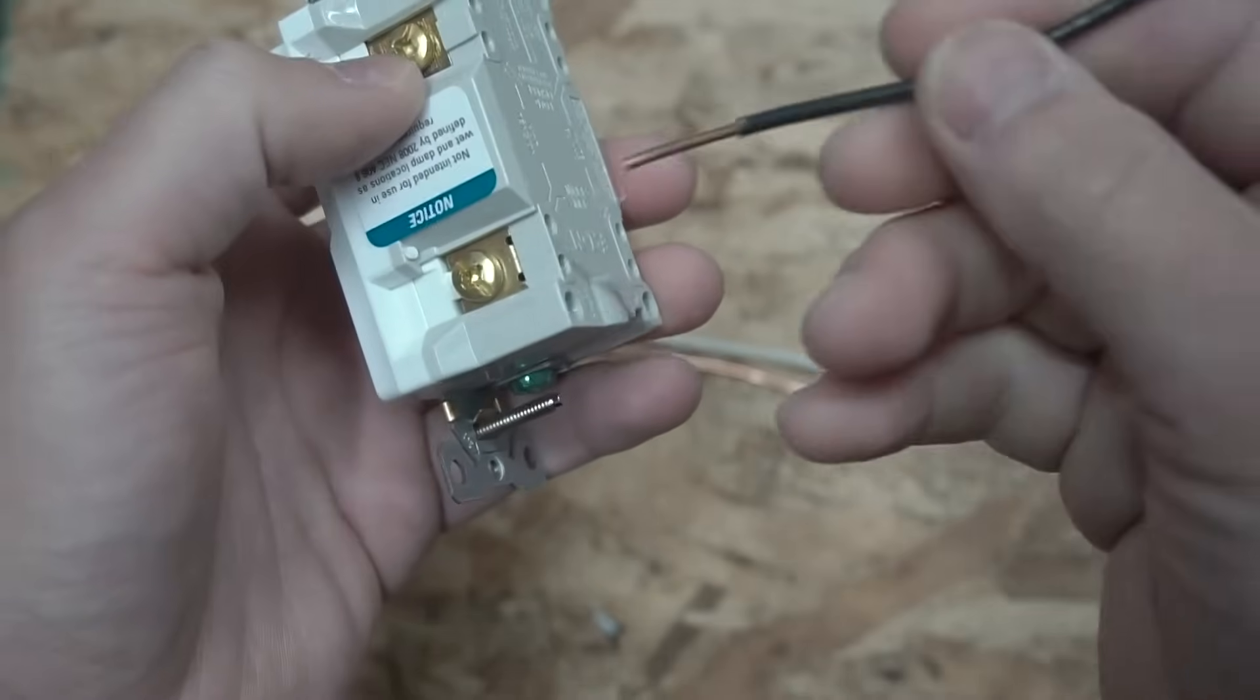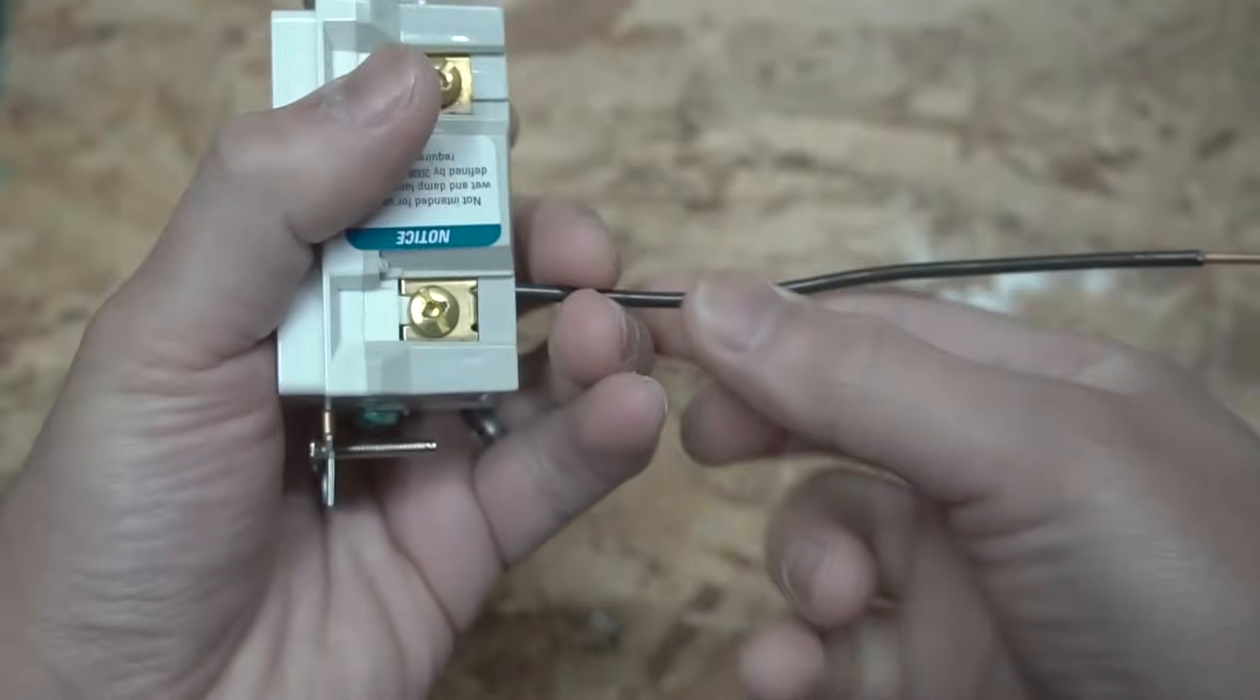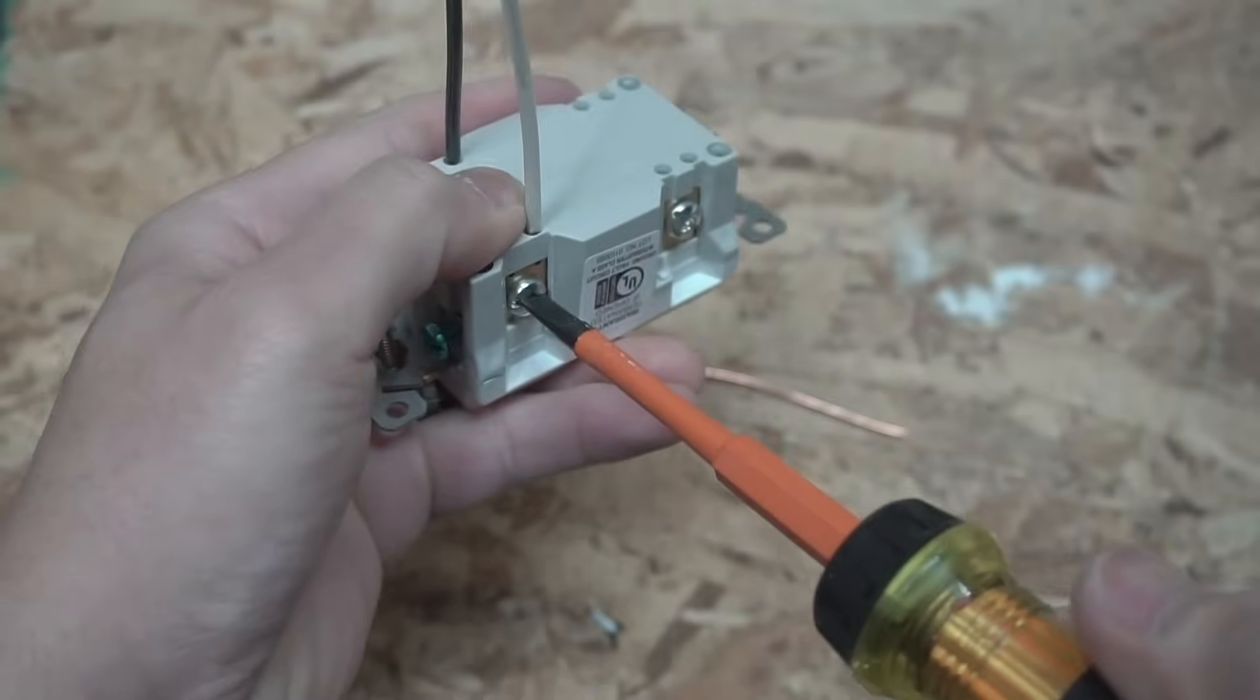So all you have to do for back wiring is pick one of these terminals. It doesn't matter. Insert two like that. What I like about back wiring is that you can tighten as much as you want. Make that nice and tight.